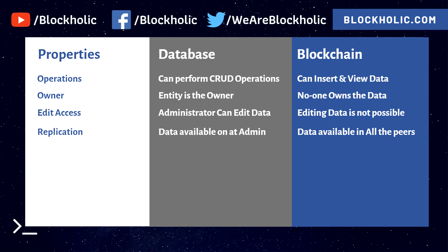The fourth point is replication. In a traditional database, data is available only at the admin level. If something goes wrong — say someone runs a query to drop the database — the data is gone. Some companies maintain backups, but a backup might be from yesterday, and all of today's transactions could be lost if the data is corrupted.